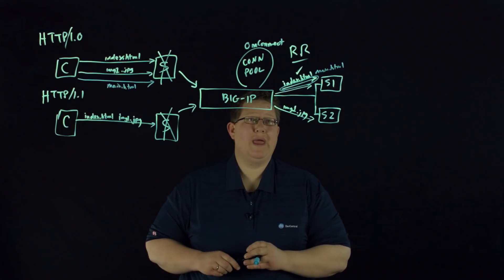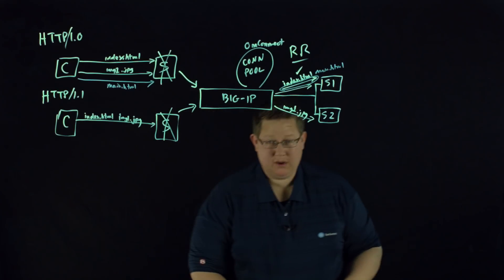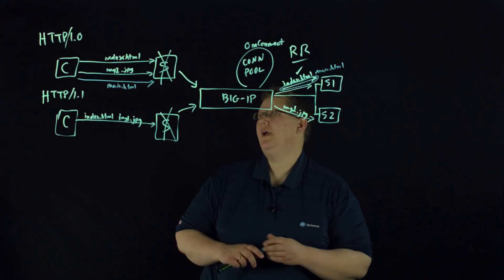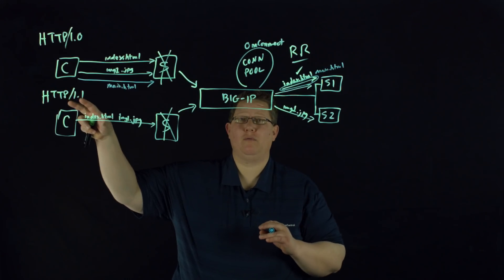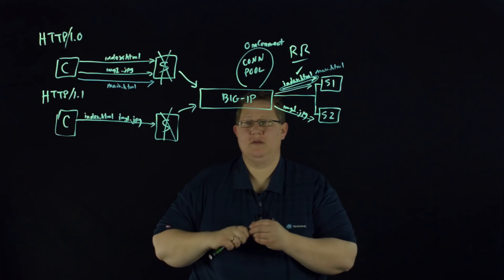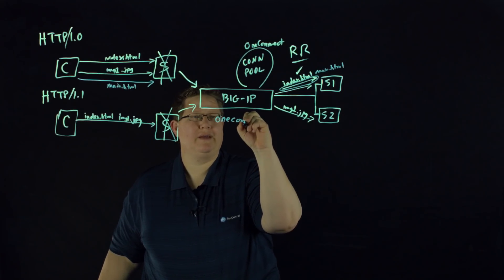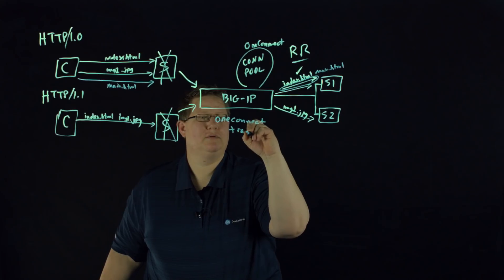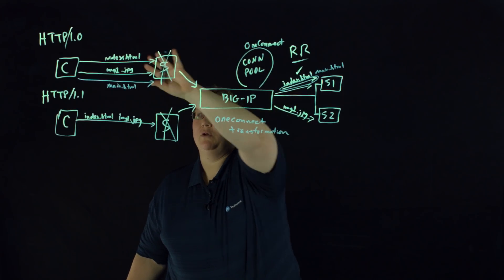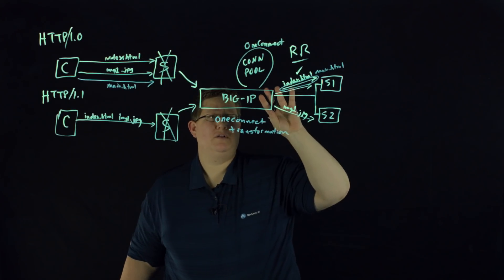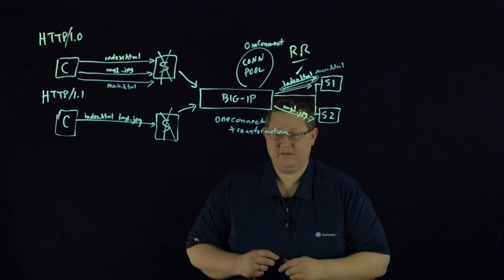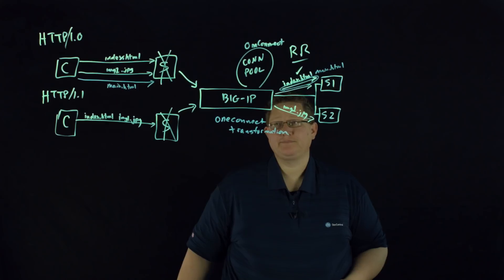One more thing I wanted to mention on HTTP 1.0. Normal OneConnect with HTTP 1.1 uses the multiplexing built-in that it can reuse connections and bind all those together. With 1.0, you can't do that. So you have what's called OneConnect transformation. It basically allows the BigIP to convert requests from 1.0 clients to 1.1 on the backside and pool those on the backside, then convert back to response in order to meet that protocol request.